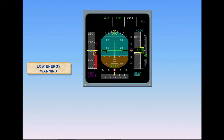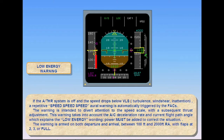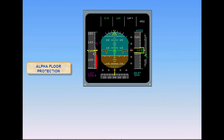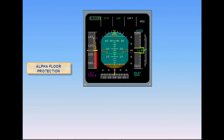The warning is armed on both departure and arrival between 100 feet and 2,000 feet RA, with flaps at two, three, or full. If the speed continues to drop below the low energy warning, and if the angle of attack increases above a given threshold, the alpha floor function of the autothrottle system triggers, and toga power is commanded.